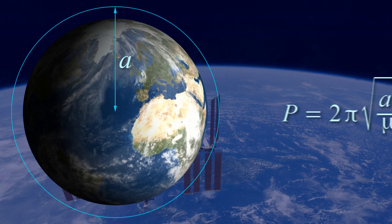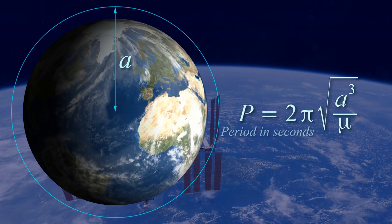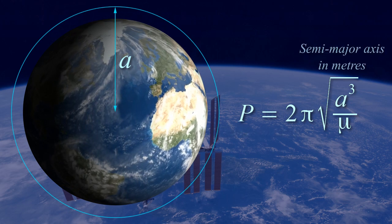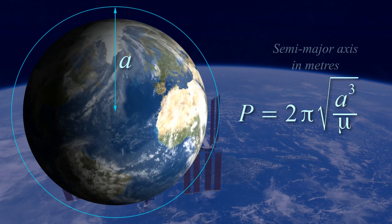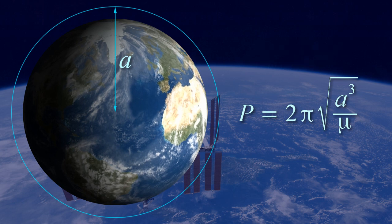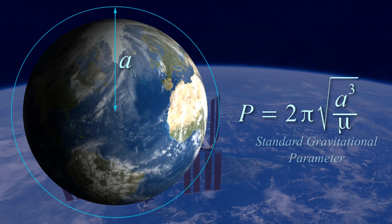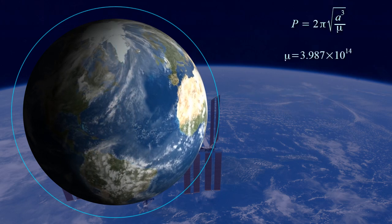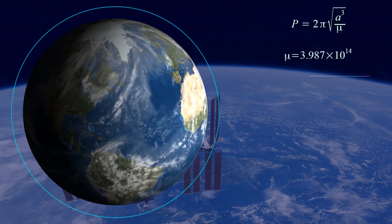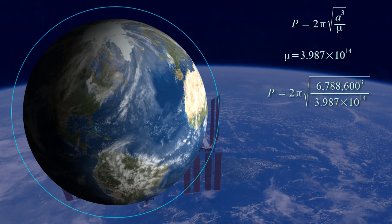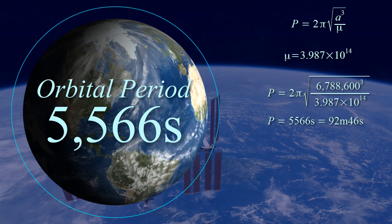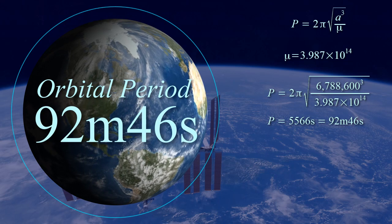Deriving from Newton's form of Kepler's third law, the period of an orbit in seconds is 2 pi times the square root of the semi-major axis cubed over mu. As before, mu is the standard gravitational parameter, which works out as 3.987 times 10 to the 14. Plug in the numbers, and the period of the ISS's orbit works out to be 5566 seconds, or 92 minutes and 46 seconds.